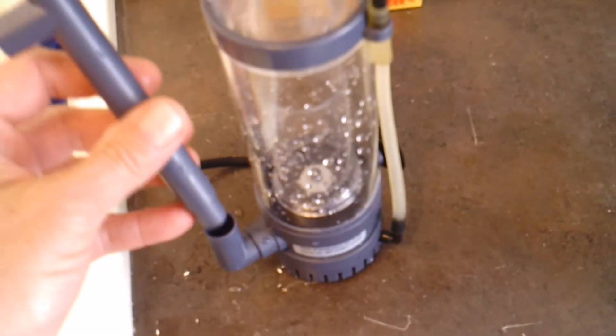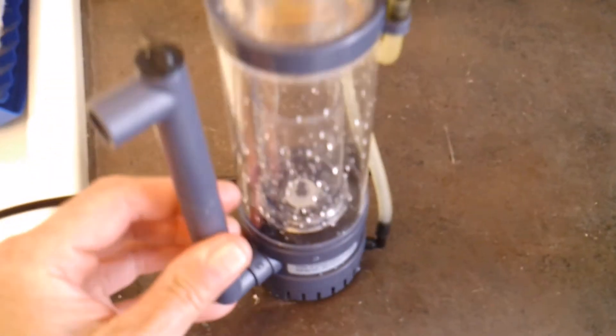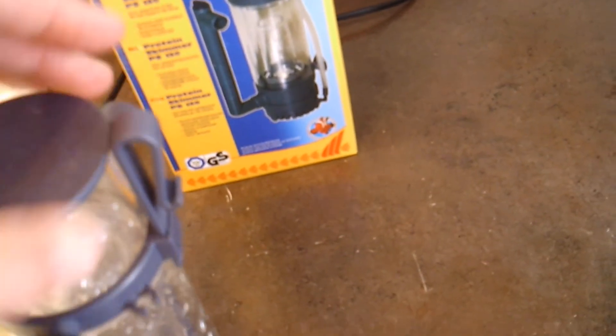And here's the output pipe. Now there's two ways you can mount it. You can mount it with suction cups, or if you have a rimless tank it's got a little adjustable clamp here that slides up and down.